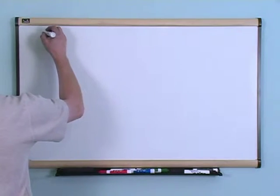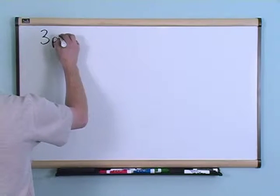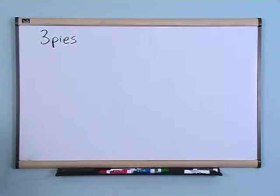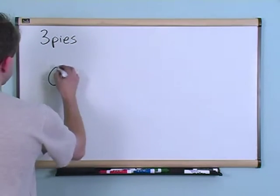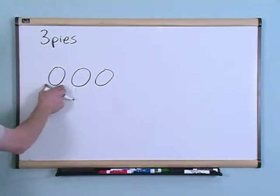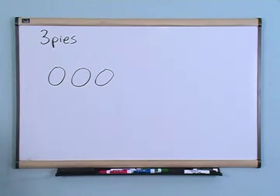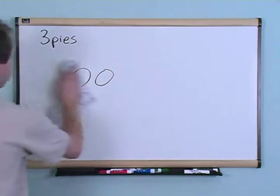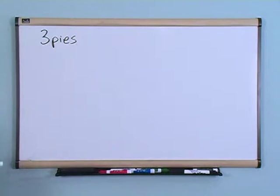I think everybody knows what three pies would look like, right? You'd have one pie, two pies, three pies. These are circles and each one of these is a pie. So I think you can visualize in your head what three pies would look like, so just hold that in your head for a second.